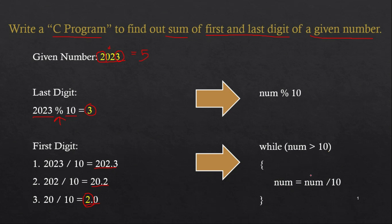Inside the while loop, we divide the number by 10 and store the result back into the same variable. So 2023 divided by 10 becomes 202, then 20, and so on. The while loop runs until the number becomes less than 10, and at that point the remaining value is the first digit.